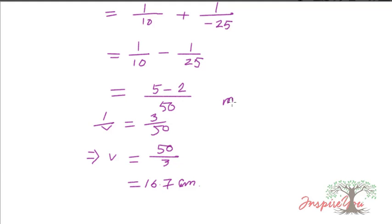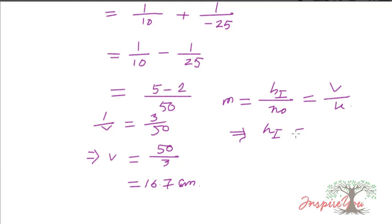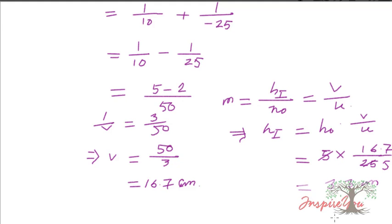Magnification m equals height of image divided by height of object, which also equals v by u. This implies height of image equals height of object multiplied by v/u. Substituting: v is 16.7, u is minus 25, height of object is 5 centimeters. After calculation, height of image equals minus 3.3 centimeters. The image height is 3.3 centimeters, smaller than object height of 5 centimeters, so the image is diminished.